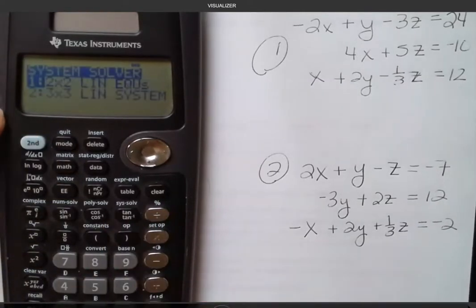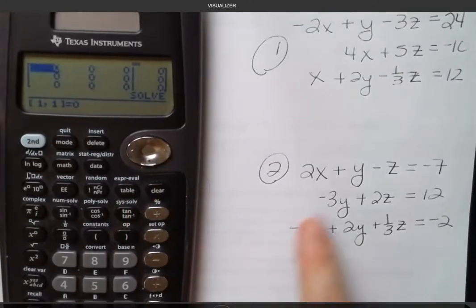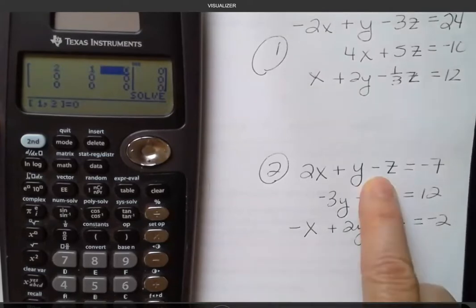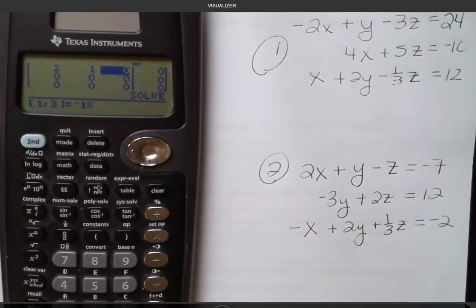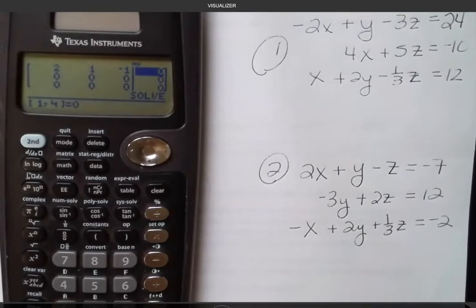So again, second function, my system solve button. Go down with the arrow to the 3 by 3. And now I'm going to enter this. 2 enter, 1 enter. This is a negative 1 because we don't see a number but we do have the minus sign there. Negative 7 enter.